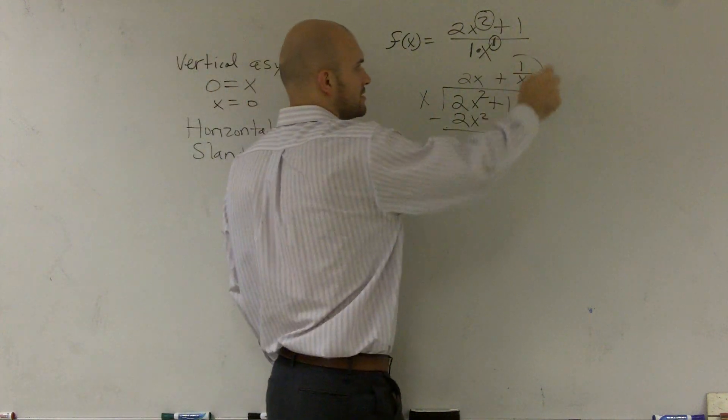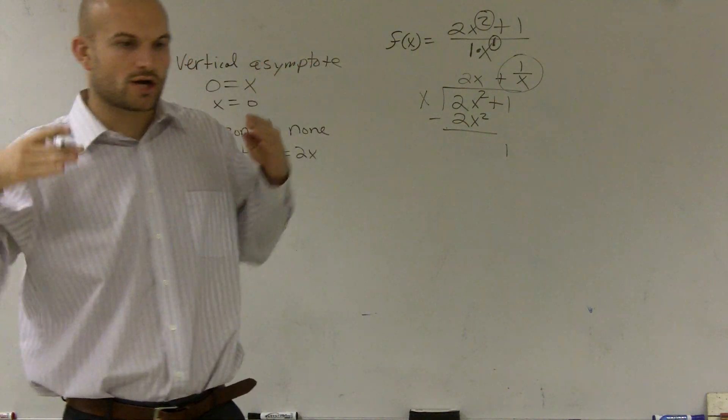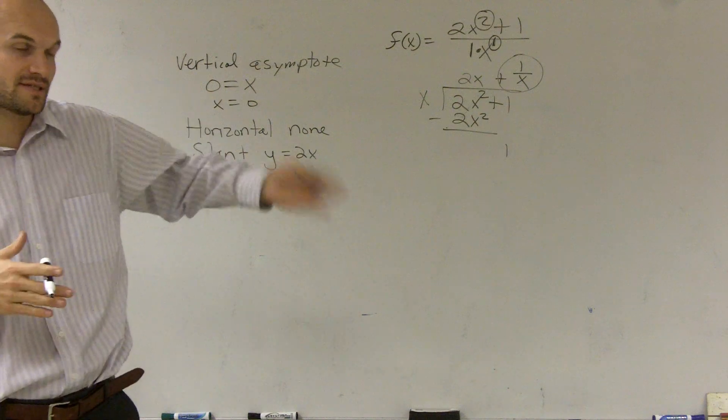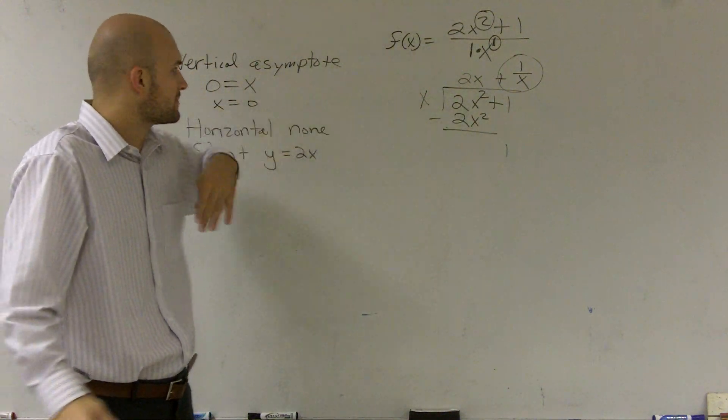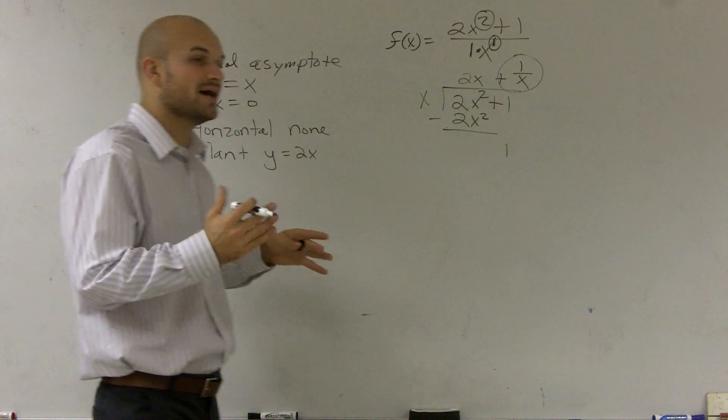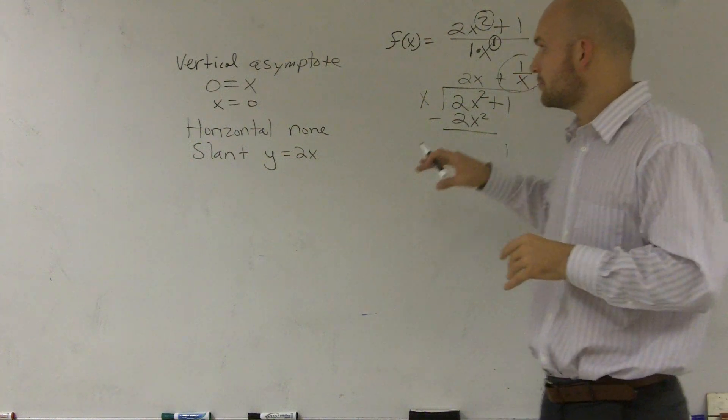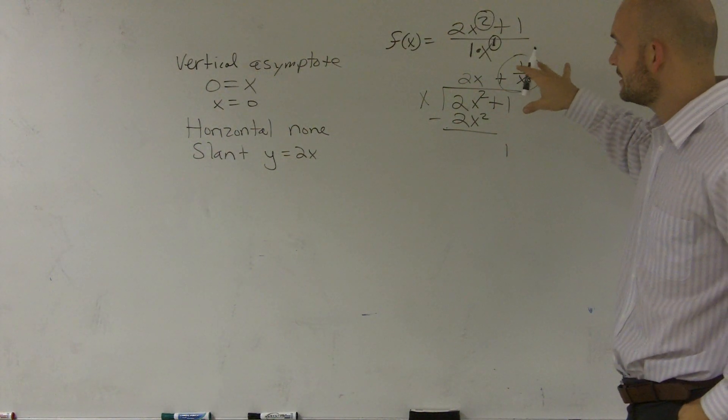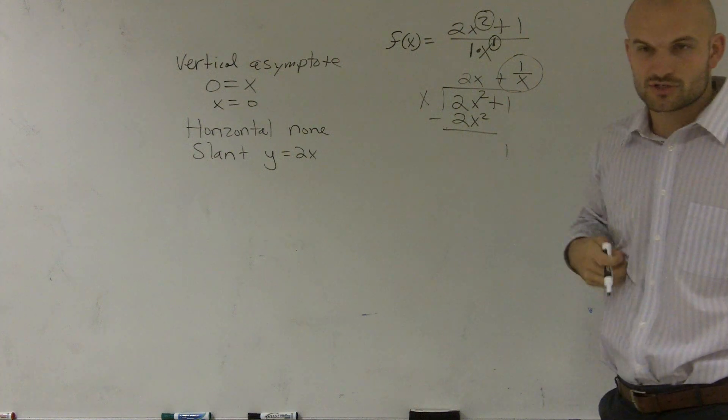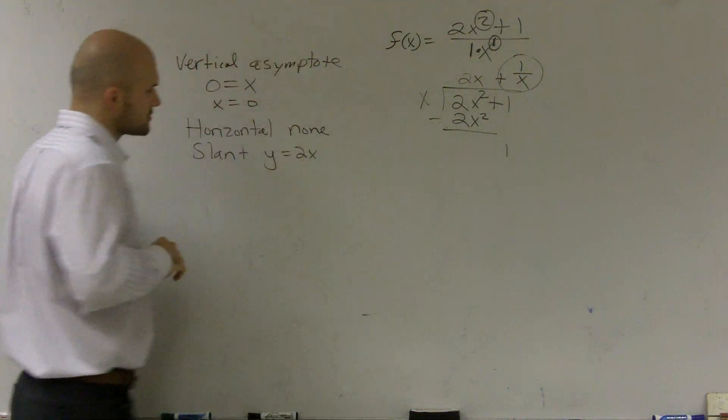our slant asymptote is y equals 2x. We're not going to be concerned with 1 over x. Because what you'll notice is when we're talking about this, when our graph approaches, remember, asymptotes is where our graph approaches. Our vertical is important because we know our graph can never cross the vertical asymptote because it can never be defined for 0 on the bottom. There are times, though, when a graph does cross a horizontal or a slant. It's possible. But the main important thing you need to understand is your graph always approaches your two asymptotes. So here, they don't approach anything with the remainder. They only approach with our divisor y equals 2x. So our slant equals y equals 2x.